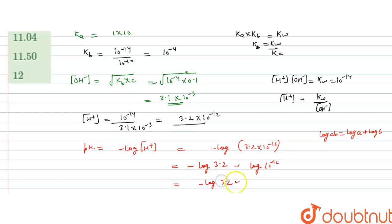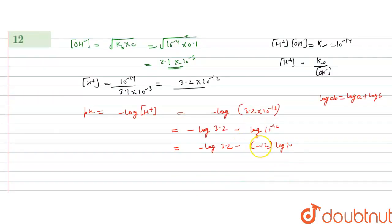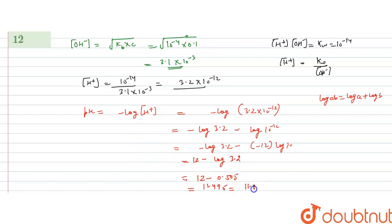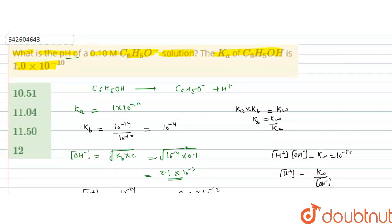That gives us −log 3.2 − (−12) = 12 − log 3.2. Since log 3.2 = 0.505, pH = 12 − 0.505 = 11.495, or approximately 11.5. So the pH of the solution is 11.5, and C is the correct answer. I hope you understood the solution. Thank you.